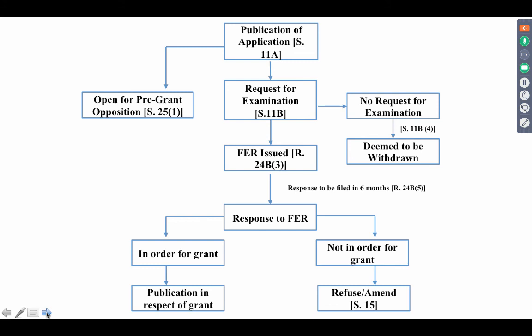Once the response comes in, if it is in order for grant — meaning the response has taken care of all the objections in the FER — then it moves for publication in respect of grant and the patent is granted and published. If it is not in order for grant pursuant to the FER, then the controller can issue a statement of objections and call for a hearing under section 15, and he may either refuse, amend, or grant the patent. This process is patent prosecution in a gist.